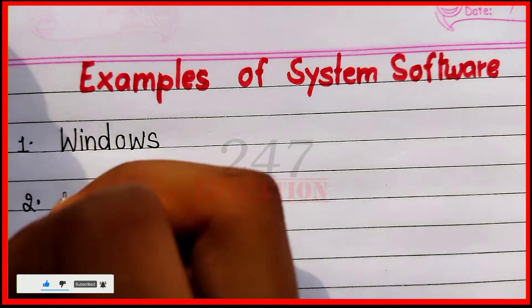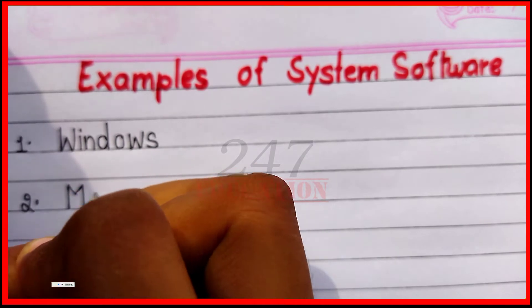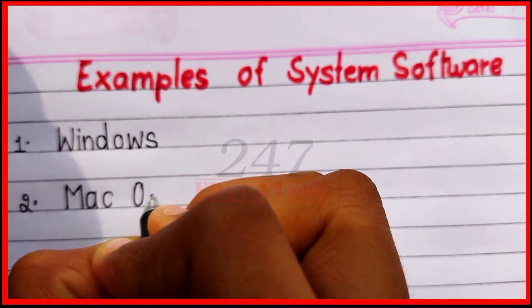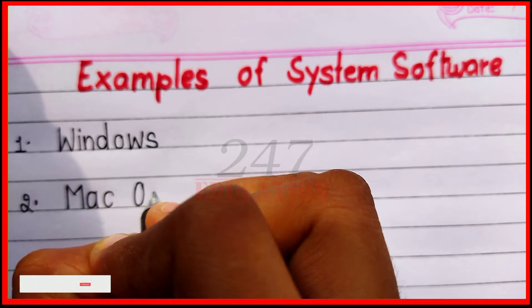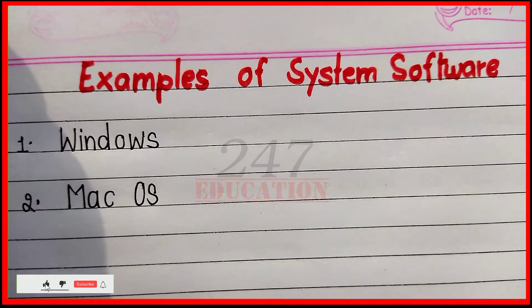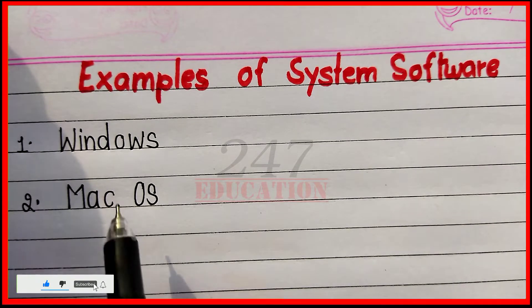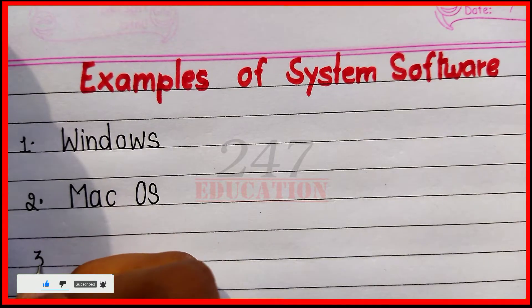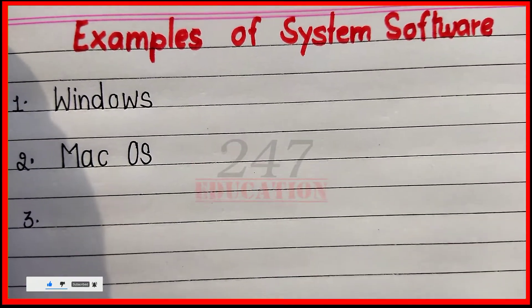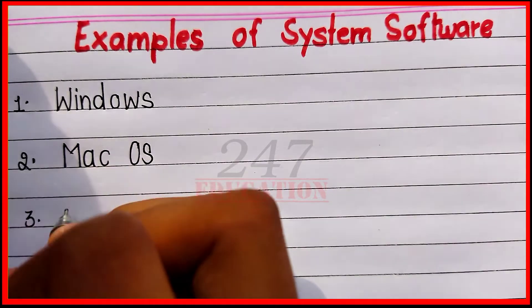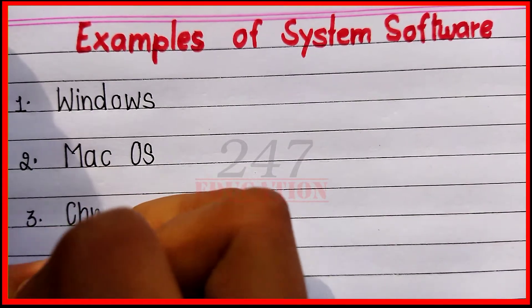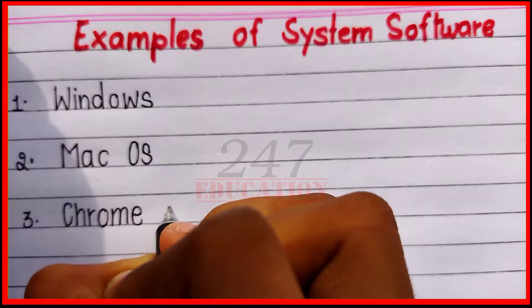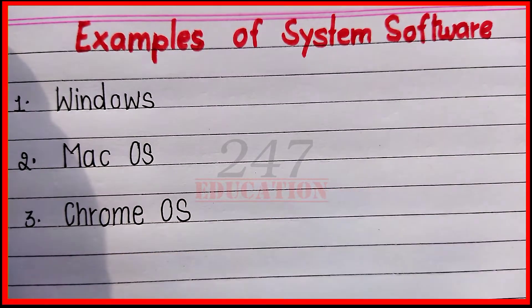Second: Mac OS. Mac OS means operating system. First Windows, second Mac OS. Third: Chrome OS.